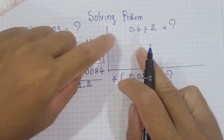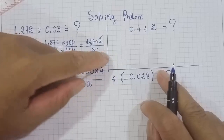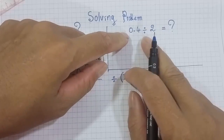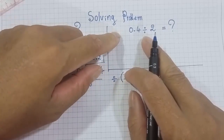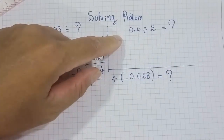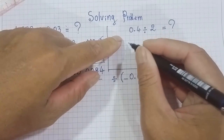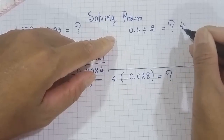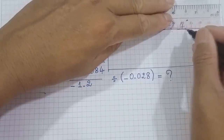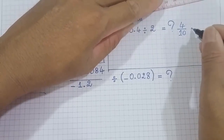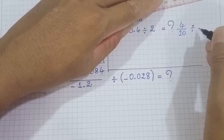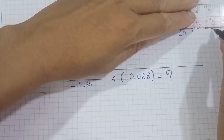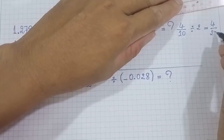Okay, keep this for the next topic. Now you can see the topic is 0.4 divided by 2. We can write this as 4 over 10, divided by 2 — which equals 4 divided by 20.